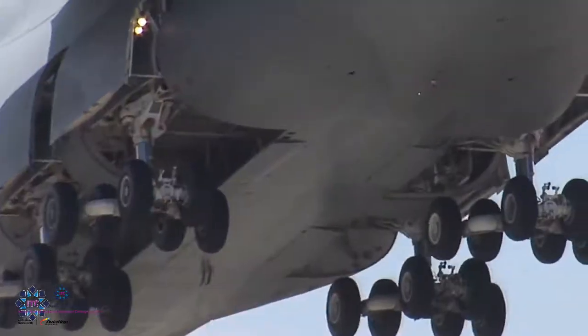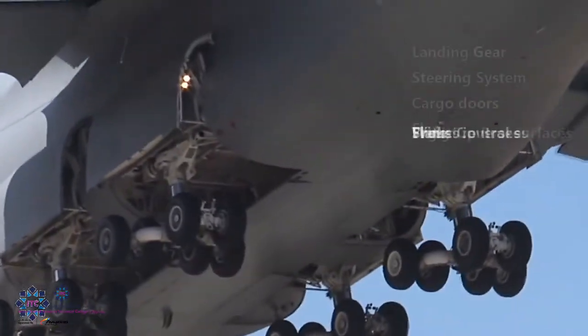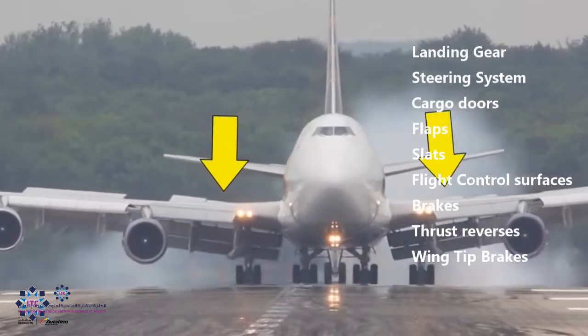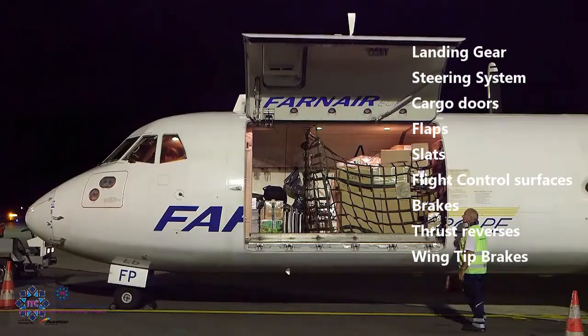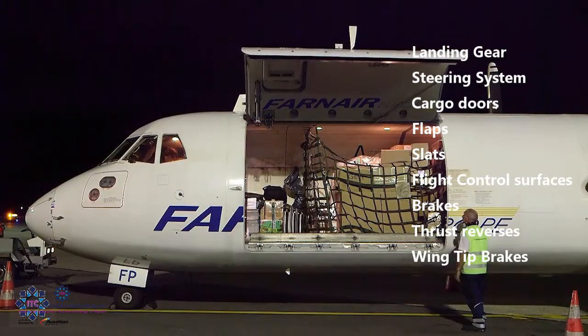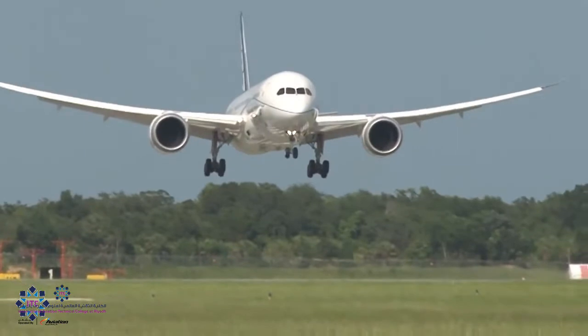On an airplane, that would mean operating the landing gear, flight control surfaces, thrust reversers, flaps and slats, and a few more to add. That is literally an entire airplane.